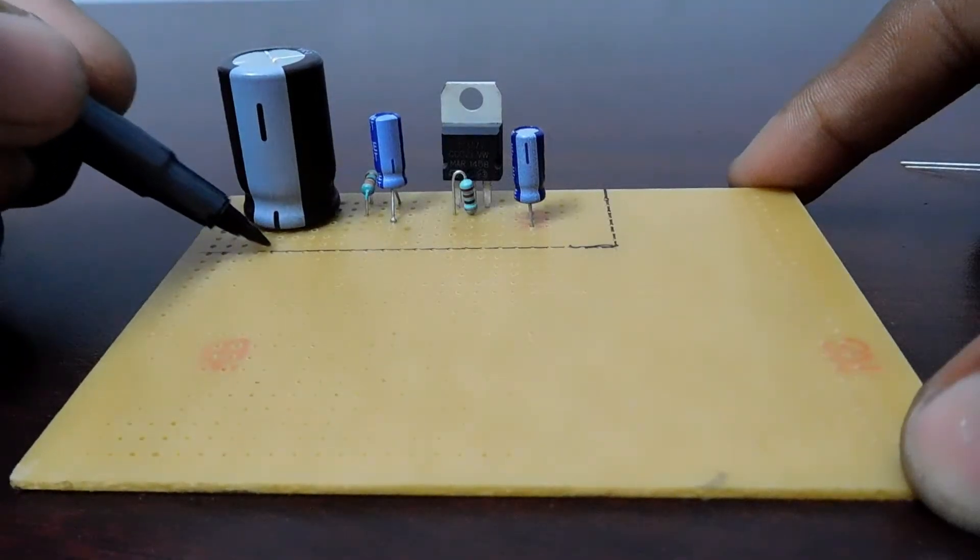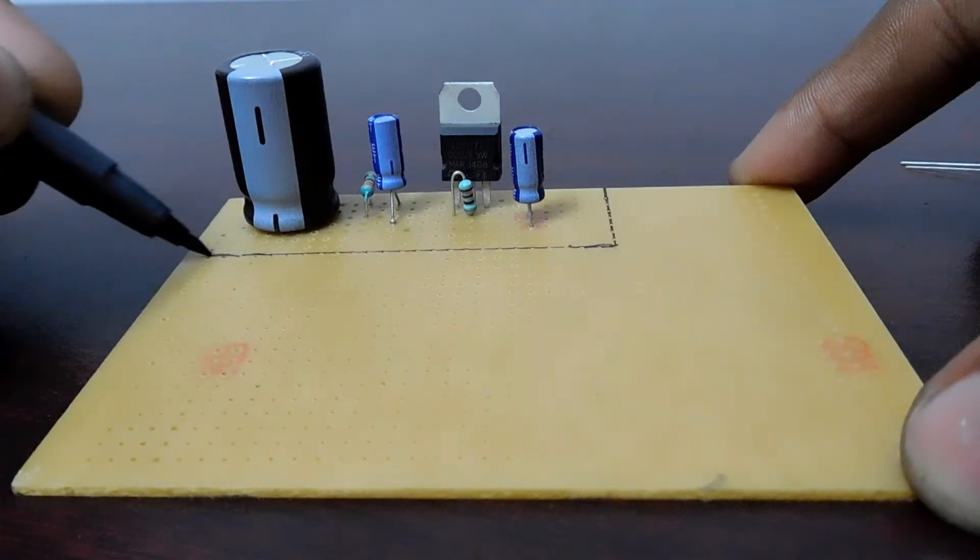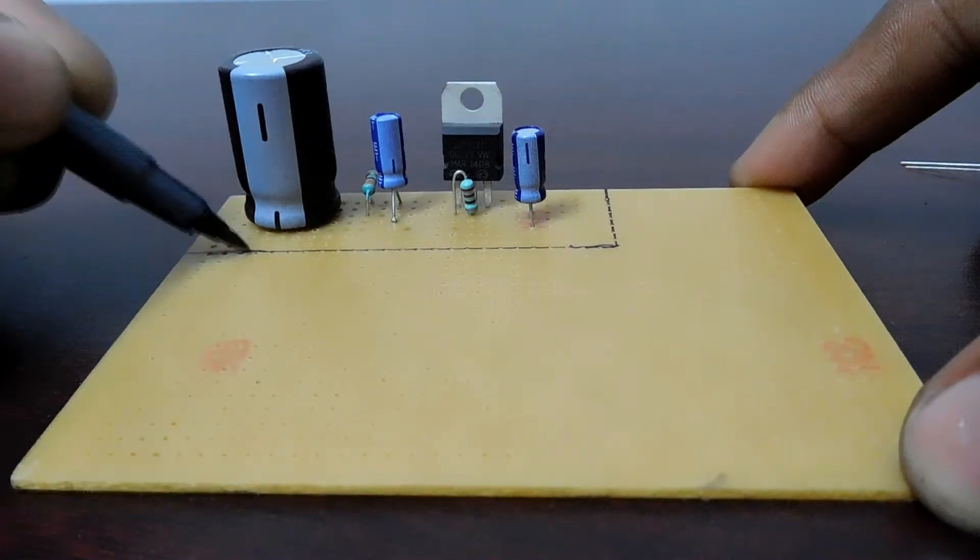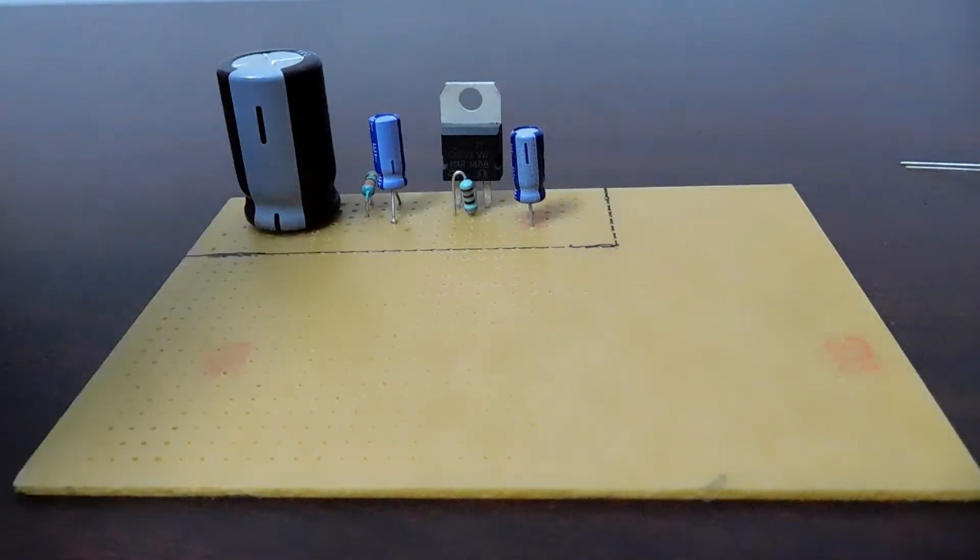Then I drew the lines on the board for cutting. But this is not the right way of doing. First you should place the entire components in place and then you should cut the board for soldering.